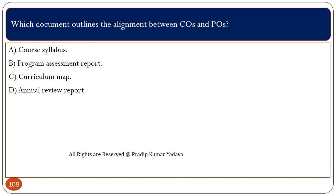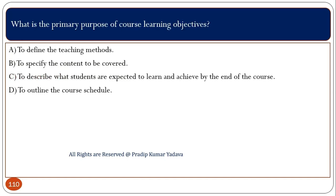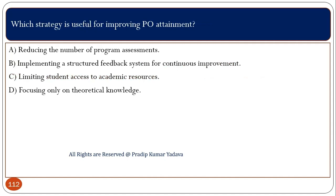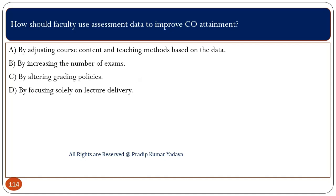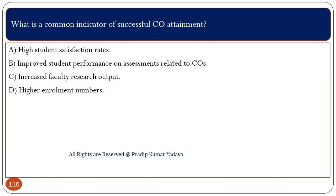Which document outlines the alignment between CO and PO? That is the curriculum map. What is the primary purpose of course learning objectives? To describe what students are expected to learn and achieve by the end of the course. Which strategy is useful for improving PO attainment? Implementing a structured feedback system for continuous improvement. How should faculty use assessment data to improve CO attainment? By adjusting course content and teaching methods. What is a common indicator of successful CO attainment? Improved student performance on assessments related to CO.